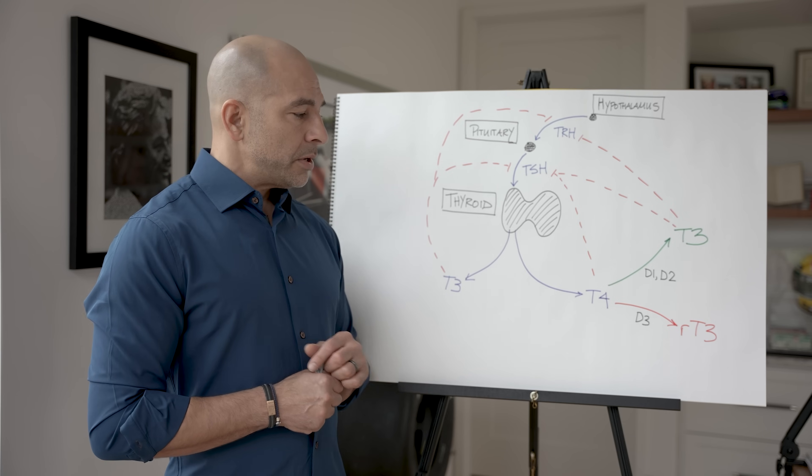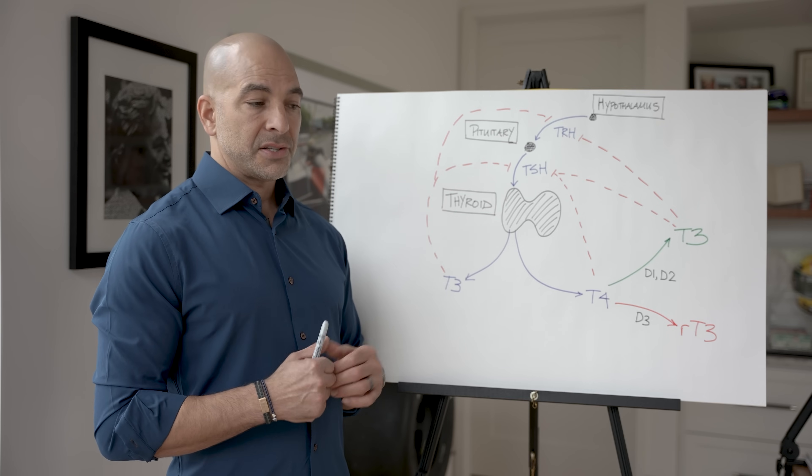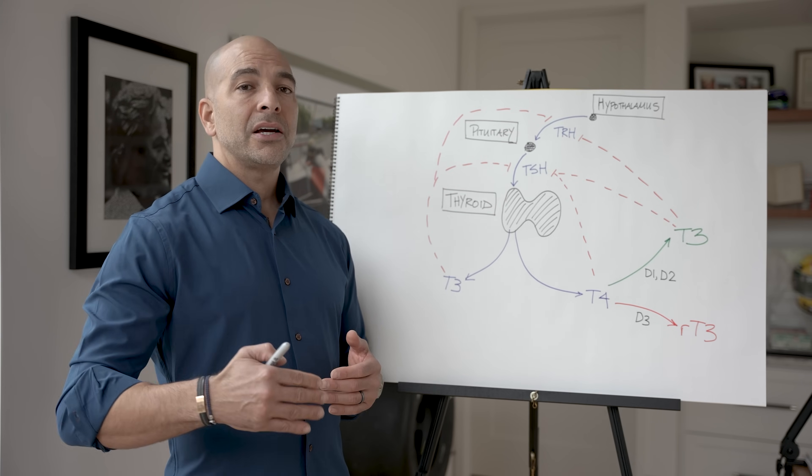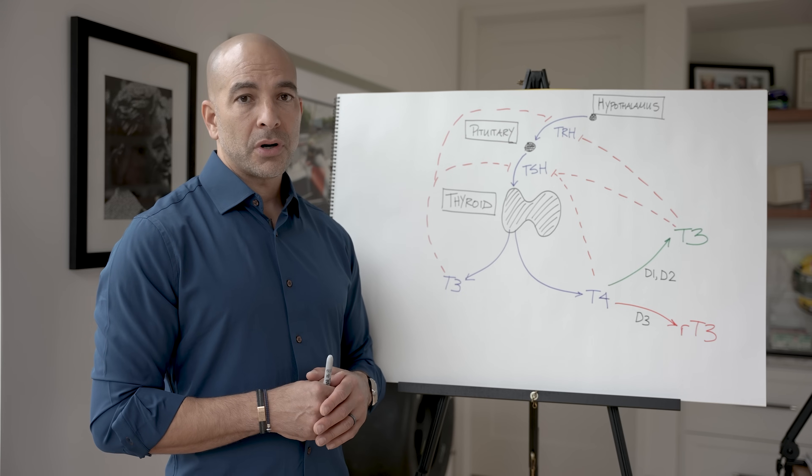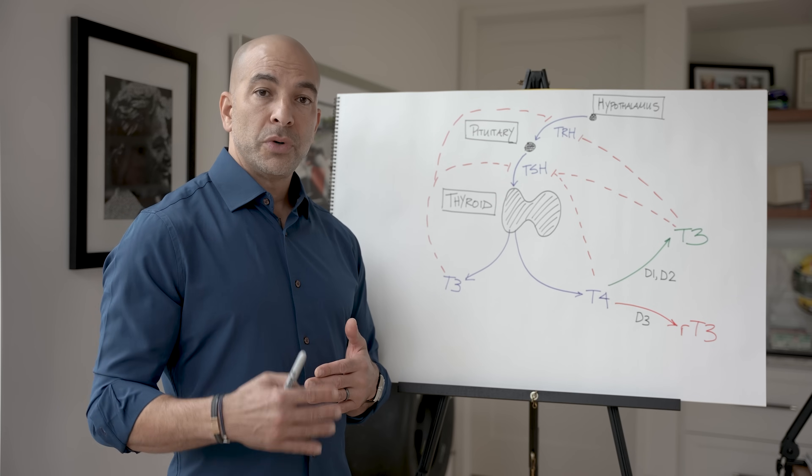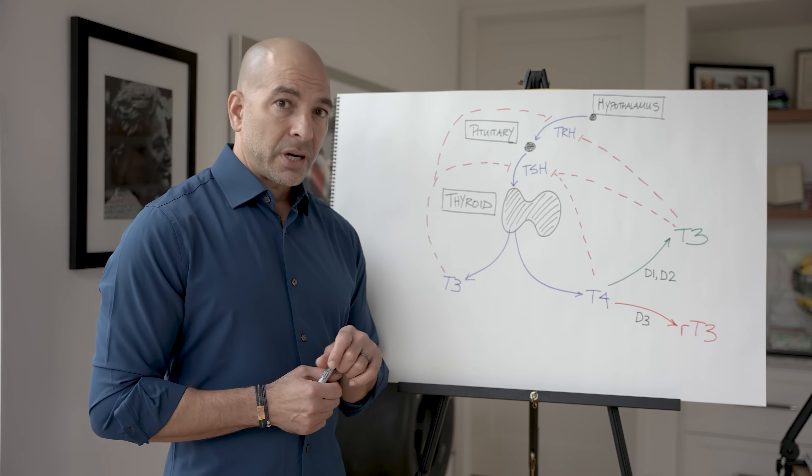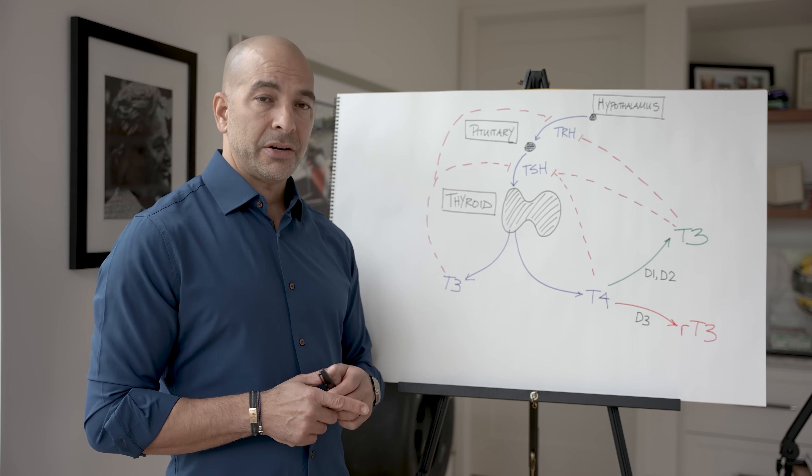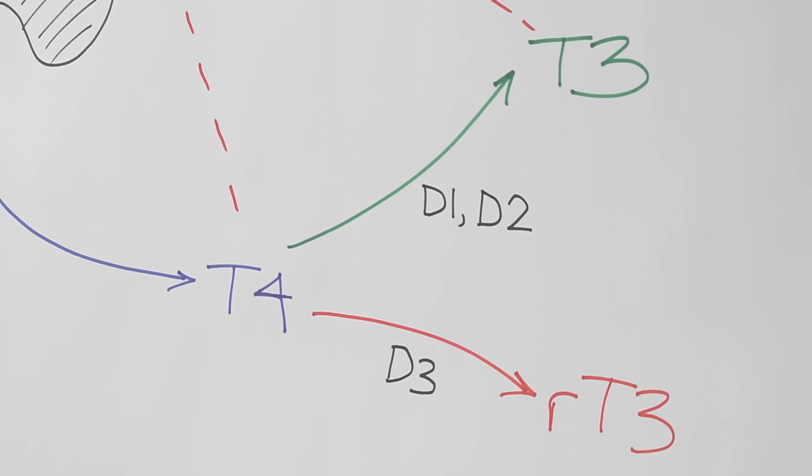And that's where these enzymes called deiodinases come in. As their name suggests, deiodinases remove one of the iodines from T4 to create T3, which is the active hormone. Now, the story gets a little bit more complicated because there are different types of deiodinases. But the three most relevant are D1, D2, and D3.